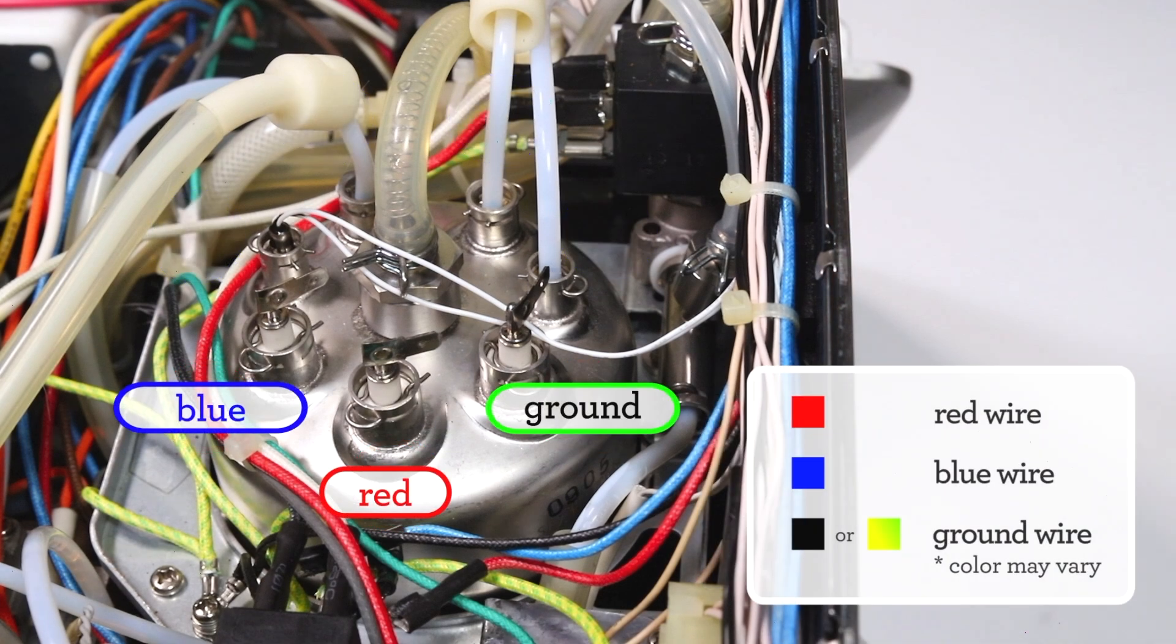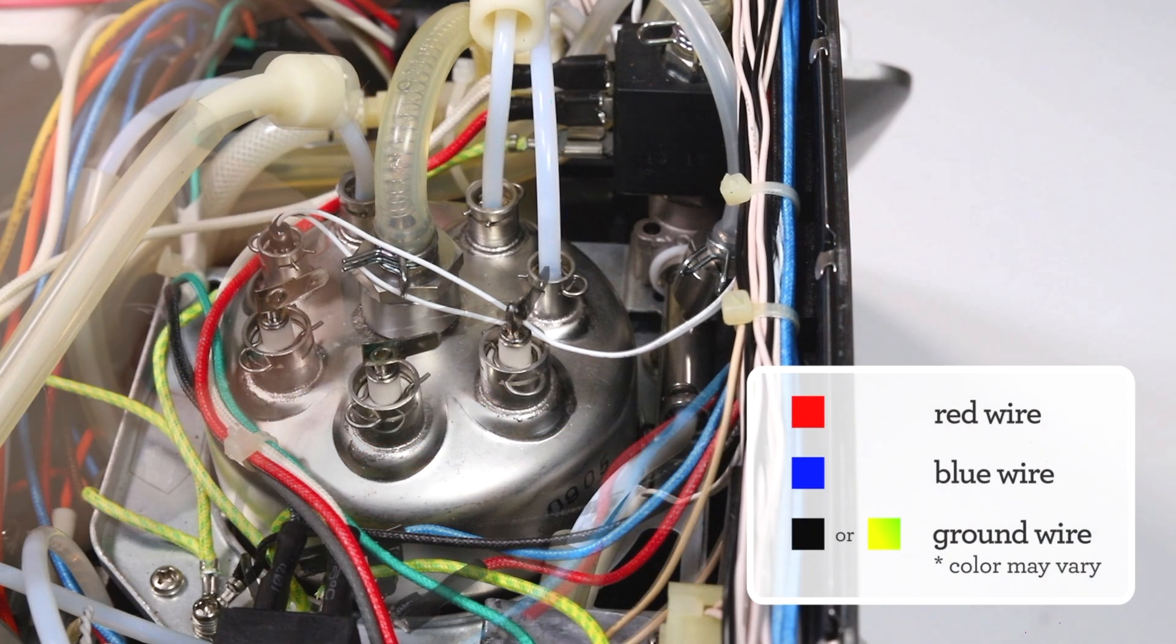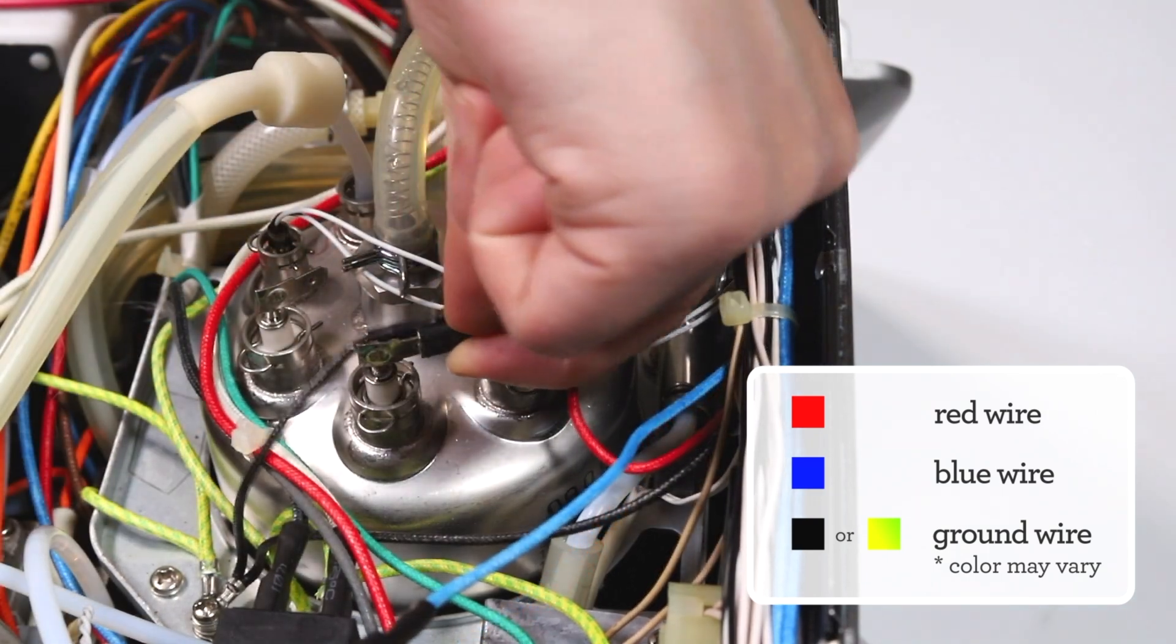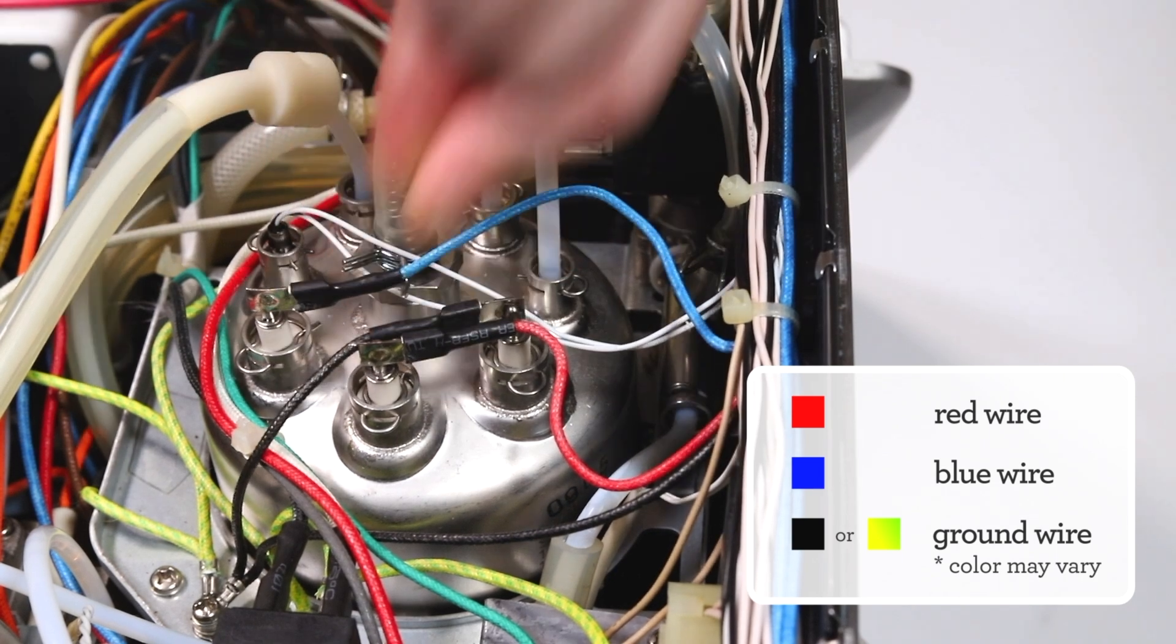Reconnect the colored wires to their proper probes. Connect the ground wire to the farthest stripe probe, the red wire to the middle probe, and the blue wire to the farthest left probe.